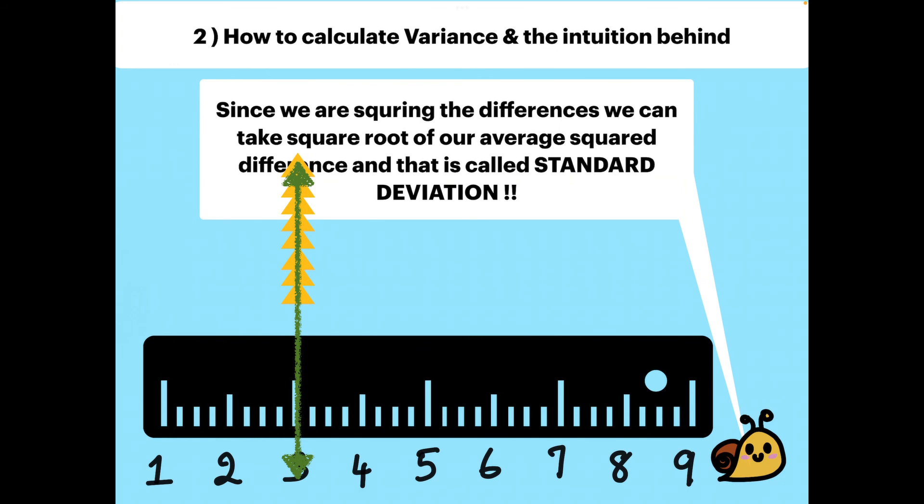Since we are calculating the square of the differences, we can take the square root of our average square differences, and that is the standard deviation.